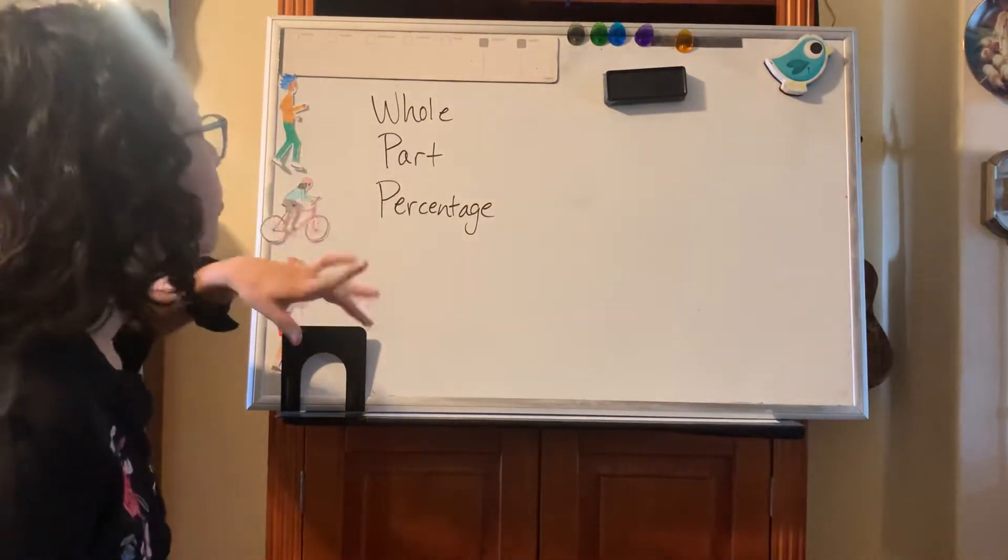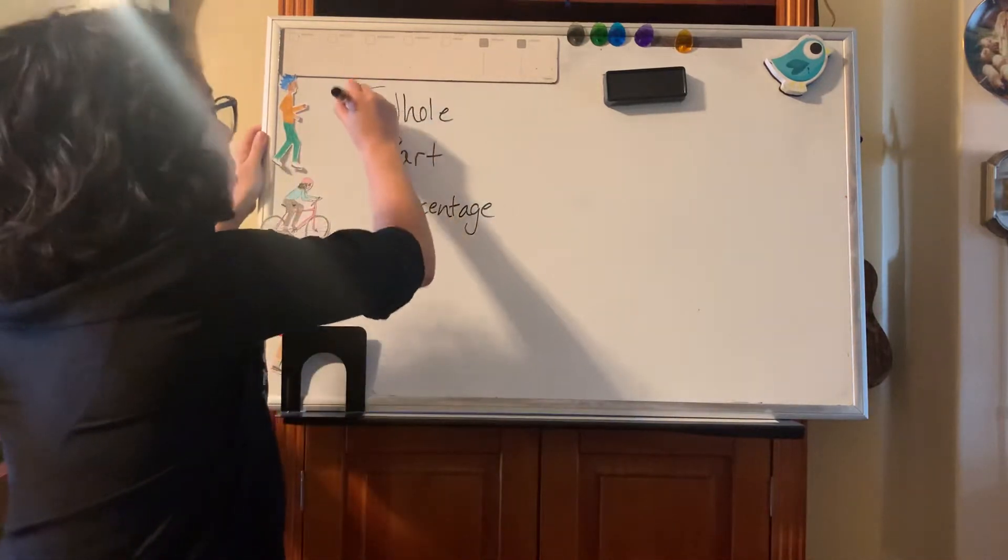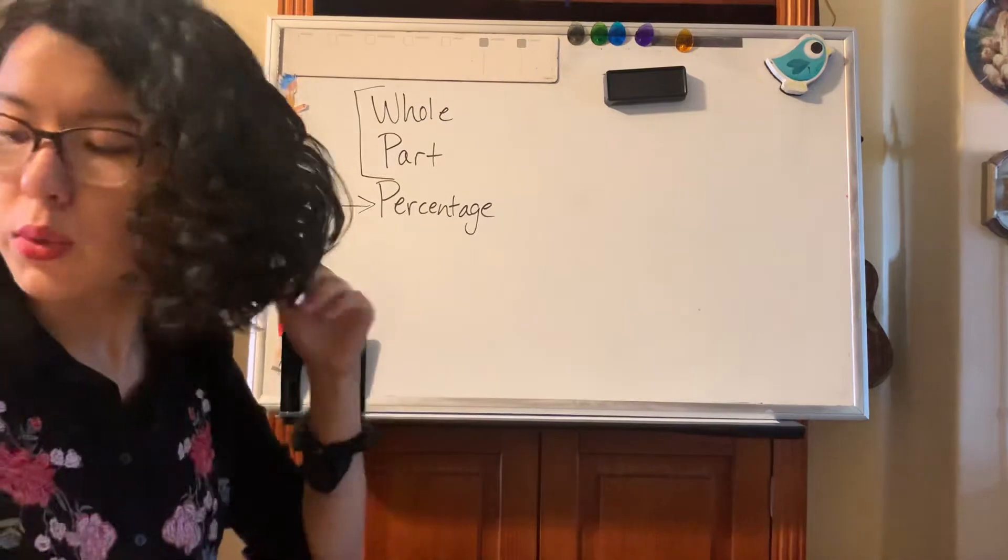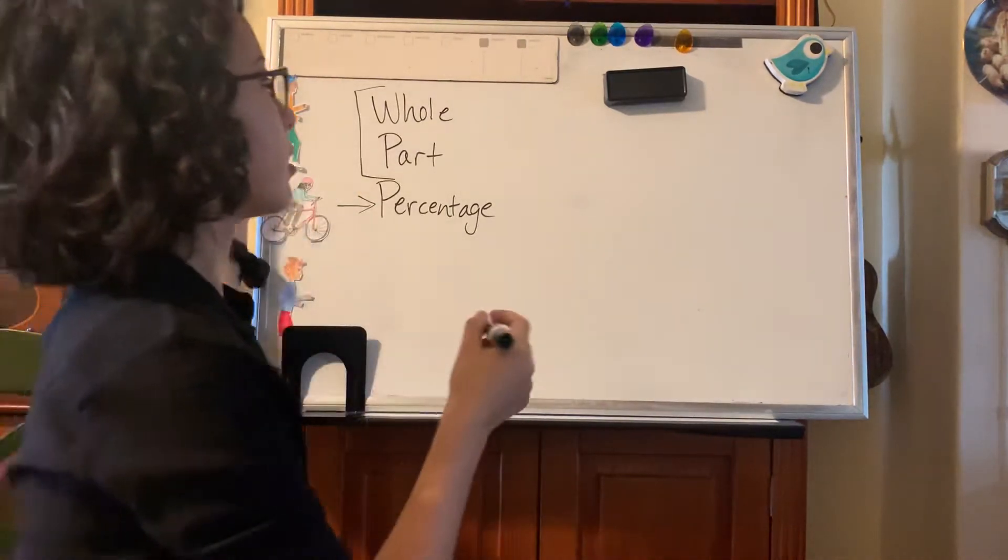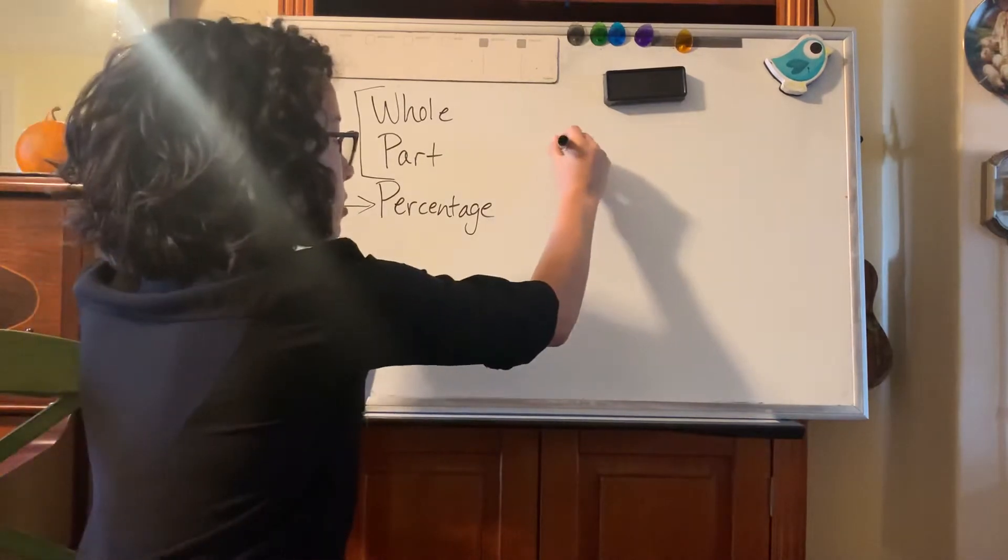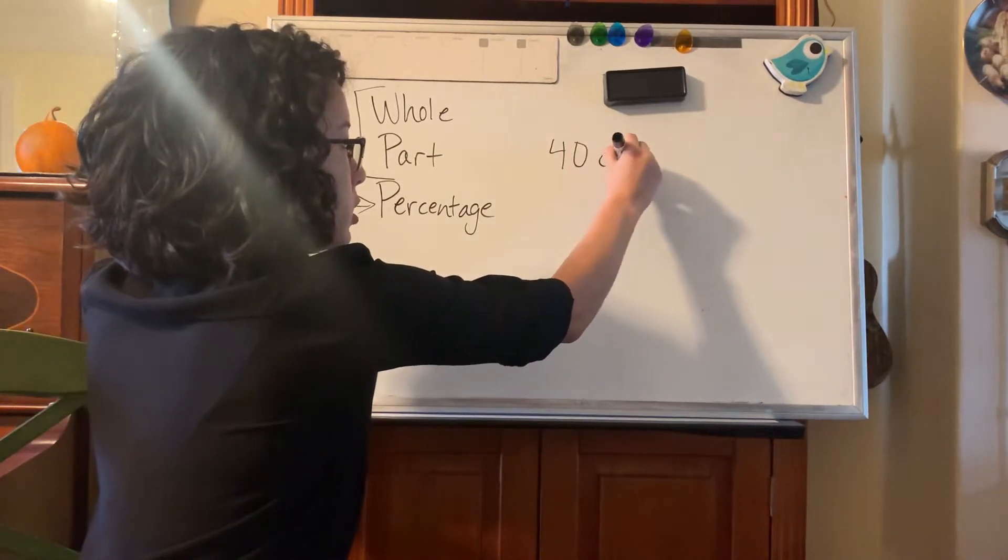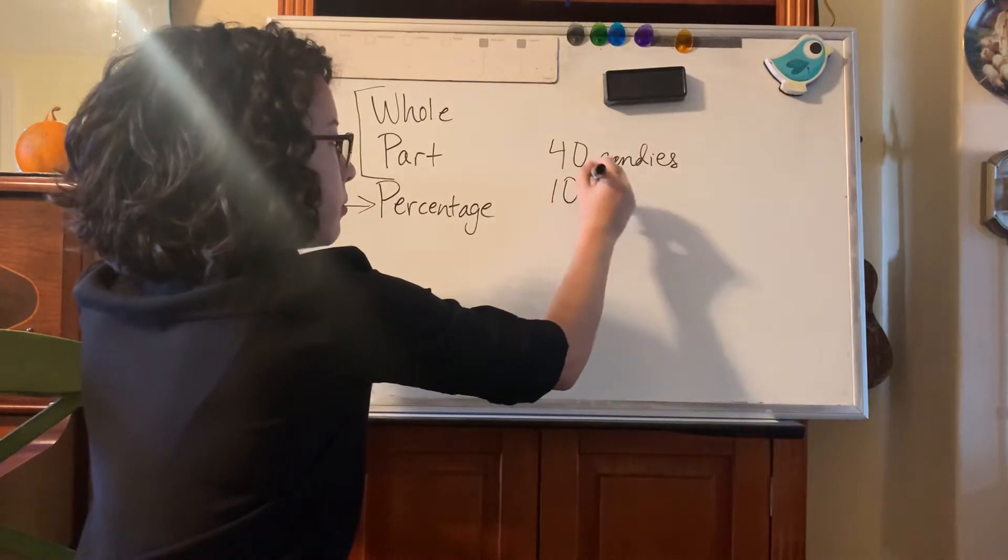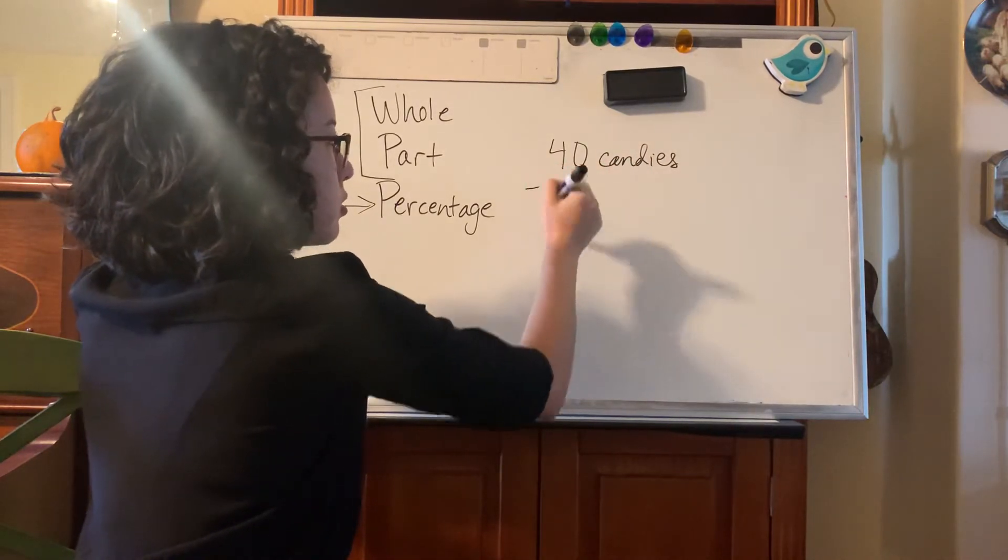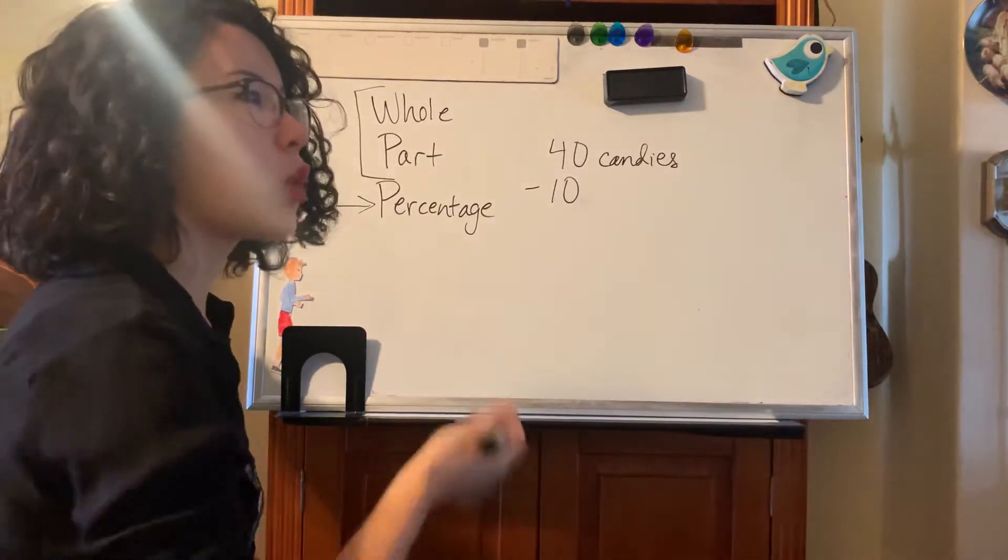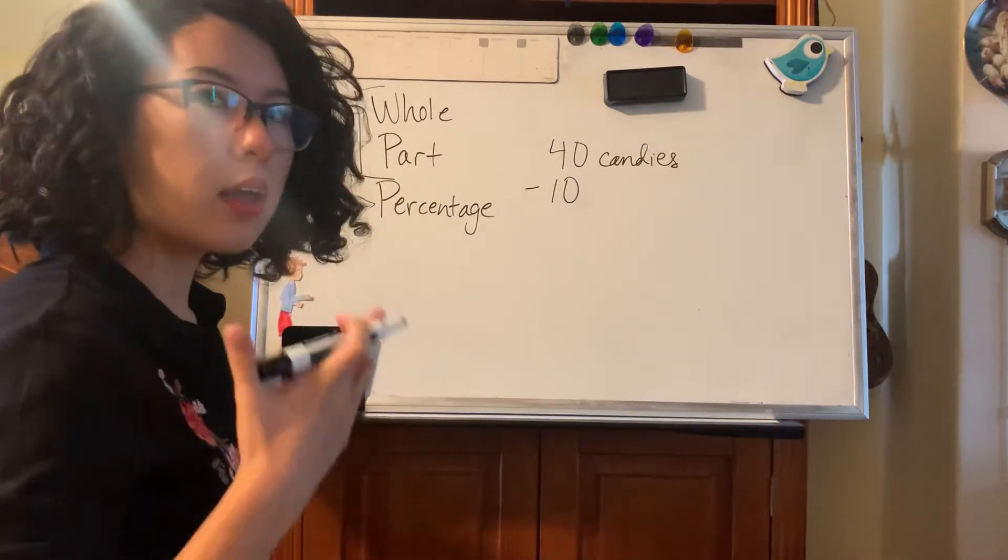So let's start off with a type of problem where they give you the whole and the part and you have to find the percentage. So an example of this might be something along these lines. Jessie has 40 candies. She eats 10. So she eats 10 of them, they're gone. And then the question might ask what percentage of the candy has Jessie eaten?